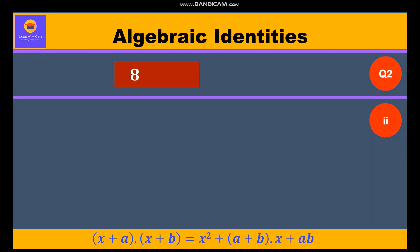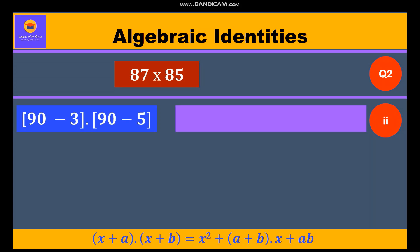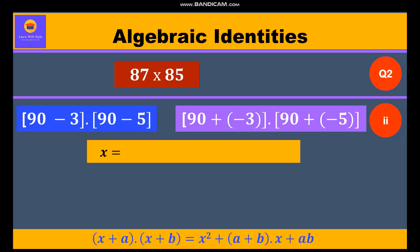The second question is 87 into 85, which equals 90 minus 3 into 90 minus 5. Taking the minus sign inside, we write it as 90 plus (minus 3) into 90 plus (minus 5). Here, x = 90, a = minus 3, and b = minus 5. We shall substitute these values in identity 5.